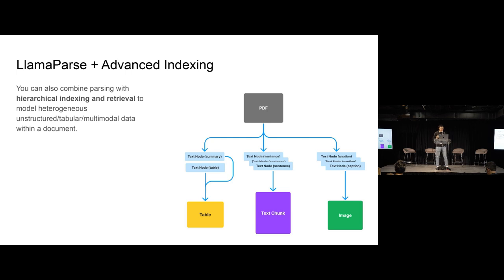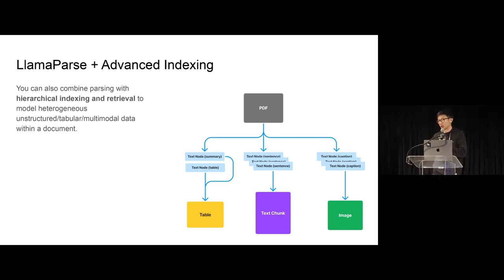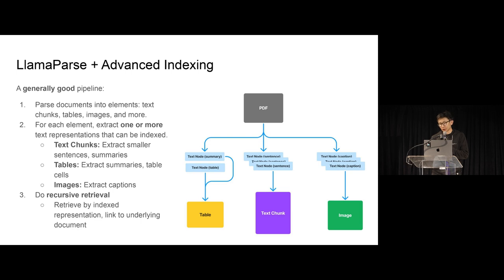What's interesting is that you can combine advanced parsing, but also with advanced indexing and retrieval. And so this is basically talking about steps towards a slightly more sophisticated pipeline than pure flat chunking and indexing. So what we talk about here is this overall idea of hierarchical indexing and retrieval to model heterogeneous different types of data within a document, whether it's unstructured text, tabular, or multimodal. So an example shown here is really this diagram. A PDF can be broken down into a bunch of text chunks, images, tables, and a generally good pipeline looks something like the following.